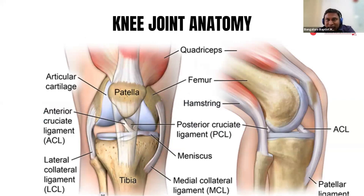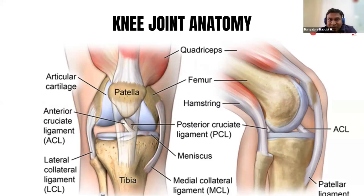Just to show that the joint is a very complex structure — we don't need to go into the details, but you can see there are bones, tendons, ligaments, muscles, and also synovial tissue and fluid. The joint is not a simple entity. There are multiple places where pathology can occur. When you have pain in a joint, it does not mean it's only in the bone — it could be in the tendon, abnormal fluid, a damaged meniscus, or multiple things.